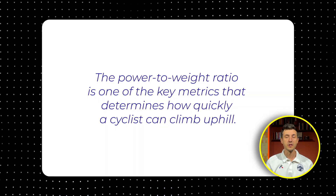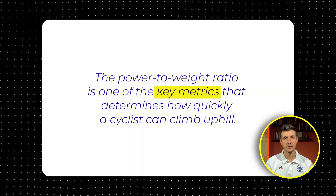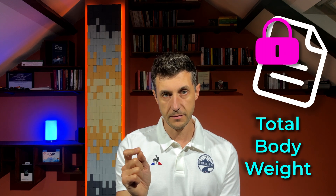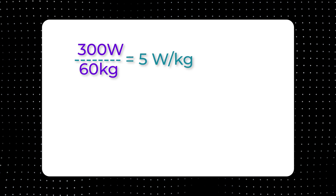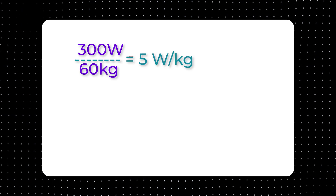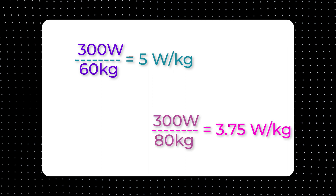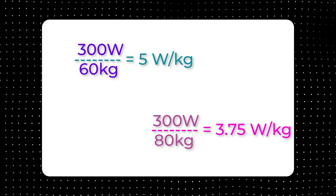The power to weight ratio is one of the key metrics that determines how quickly a cyclist can climb uphill. Your power to weight ratio really starts to affect performance when climbing, because when you climb, gravity becomes the primary hindrance to your forward motion. The amount of gravitational force you need to surpass relies on your total body weight. For example, a 60 kilogram individual generating 300 watts — equivalent to 5 watts per kilogram — will result in a quicker ascent compared to an 80 kilogram person generating 300 watts.